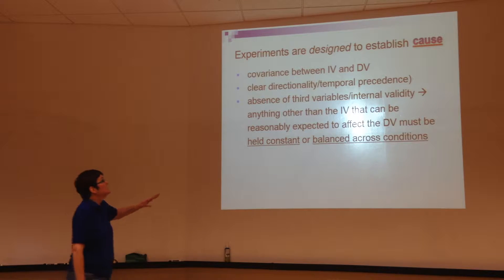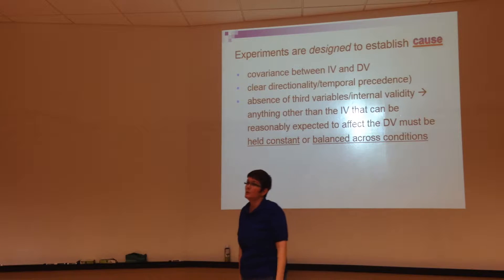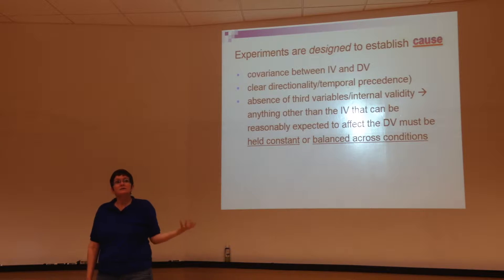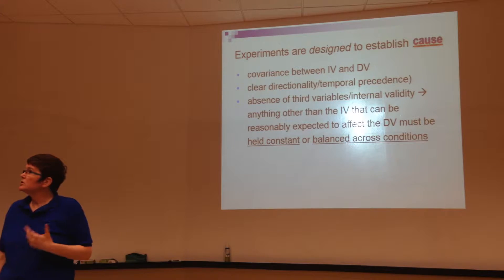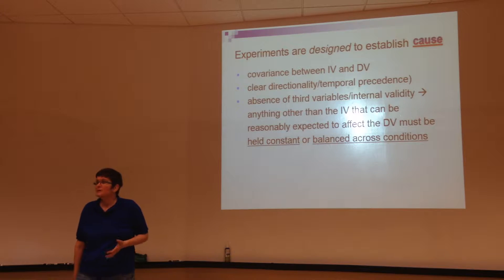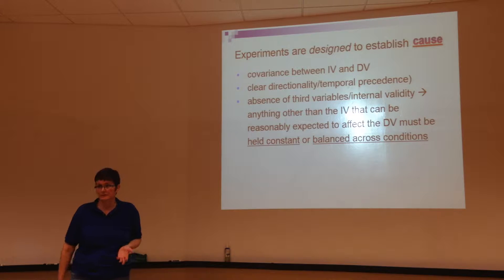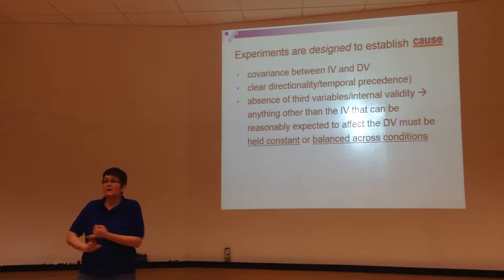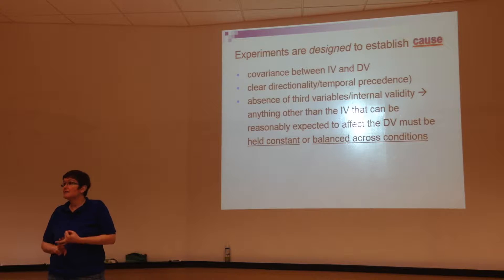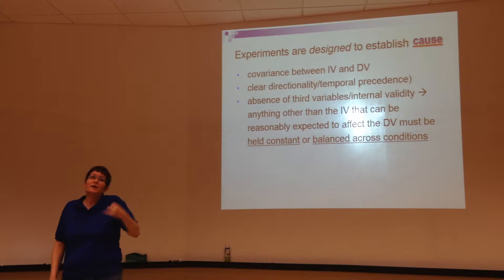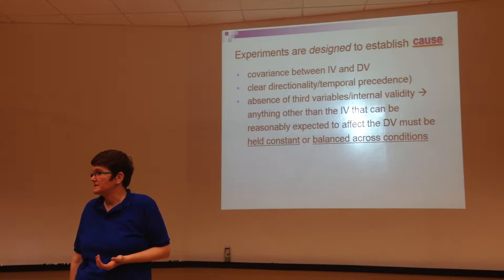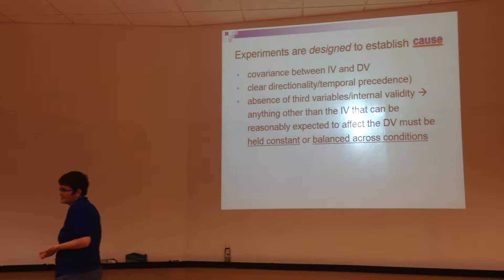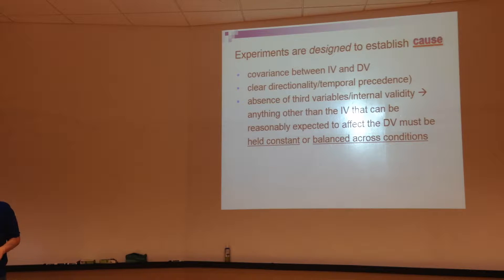We do that by trying to hold things constant or balancing things across conditions that we can't hold constant. For example, in a study with rats where I give them injections of testosterone in varying amounts and look to see if the testosterone is related to how aggressive they were subsequently, I need to think about variables that aren't the testosterone and aren't their level of aggression — like the sex of the rats. Male rats already have higher baseline testosterone, so they're naturally more aggressive.